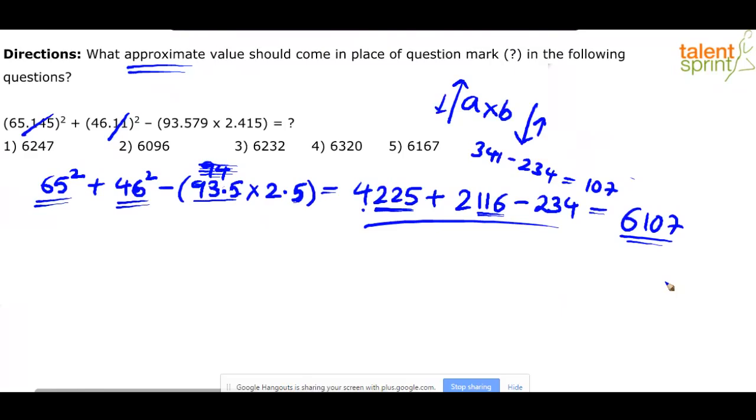Now look at the options. See, we know that answer will be more than what we have got here. Yes or no? Answer has to be more than 6,107. This is an approximate answer. Actual answer will be greater than 6,107.